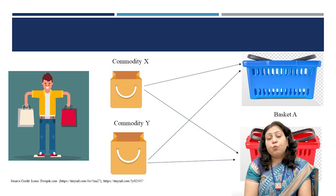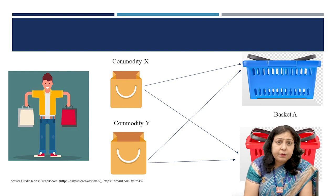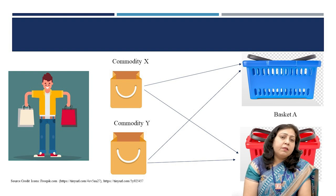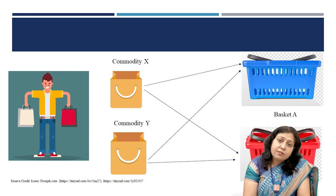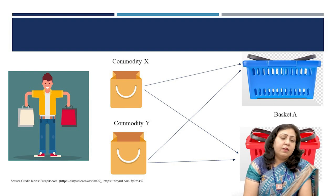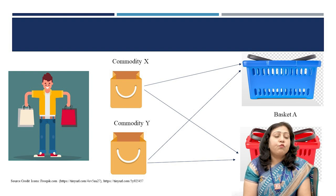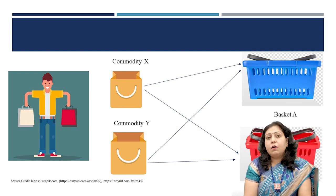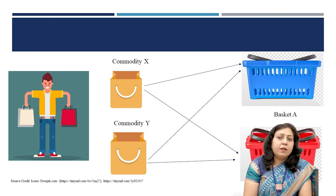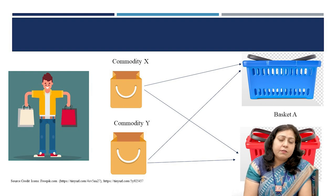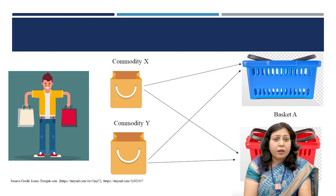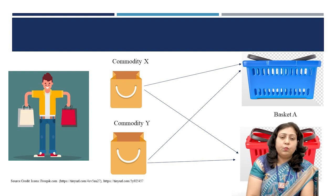Now, if Mr. P chooses one basket over the other because it is cheaper, then Mr. P is not said to have revealed his preference rationally, as one will buy goods that are of lower cost. He will only reveal his preference when the prices of both baskets are the same and he chooses one basket over the other because he likes that basket over the other.